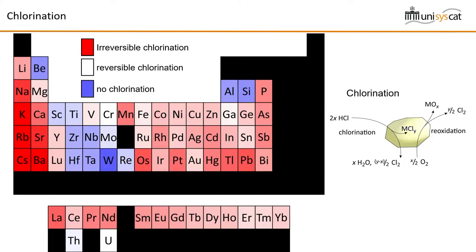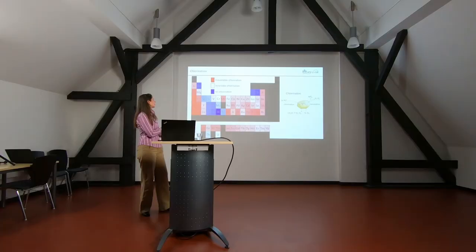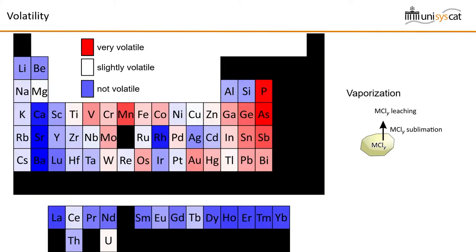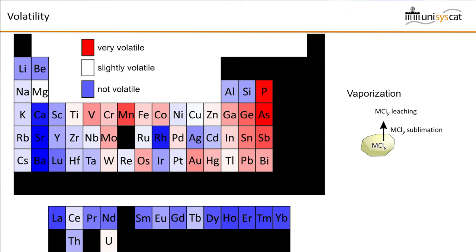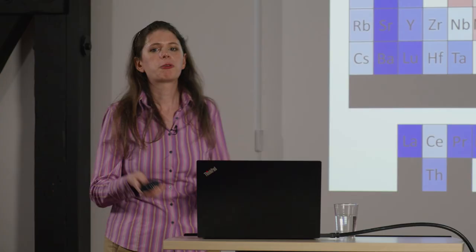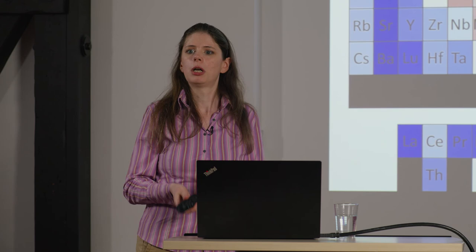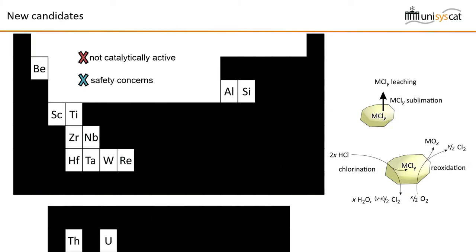Because the descriptor is just a number, we can display the result in a periodic table. I colour-coded the result: red means bad and blue means good. Looking at the chlorination descriptor, we can see we have a few materials that are not at all prone to catalyst chlorination, while some others are extremely prone to catalyst chlorination, and some are in between. However, we have a second property — the volatility — which we can also calculate and display in the same way. Here again, red means bad and blue means good. Some materials are not volatile at all, while others are volatile. What we need to do now is take the materials which are blue for both of these criteria.